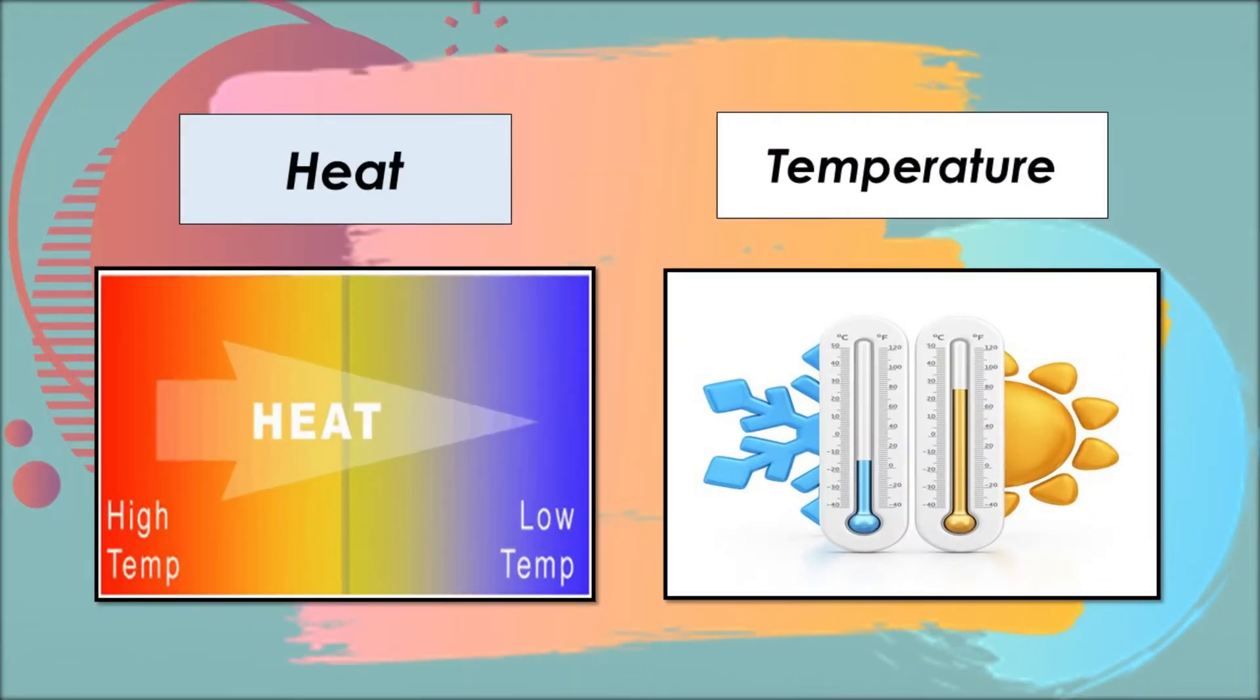Heat and temperature are often confused with one another. Temperature, in the simplest sense, is a measure of hotness or coldness of an object. An object that is hot has a high temperature, and an object that is cold has a lower temperature. Heat, on the other hand, is energy transferred from one object to another due to the difference of temperature between the two objects. That is why it is also called the energy in transit.